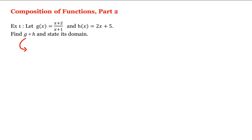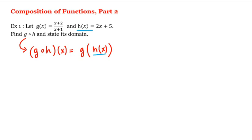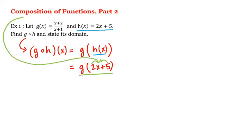This composition is defined as follows: g composed with h of x is equal to g of h of x. But h of x is 2x plus 5, therefore this is equal to g of 2x plus 5. And what is g of any input? We take this input and we plug it in wherever we see an x. That is, this is equal to 2x plus 5 plus 2 divided by 2x plus 5 plus 1.